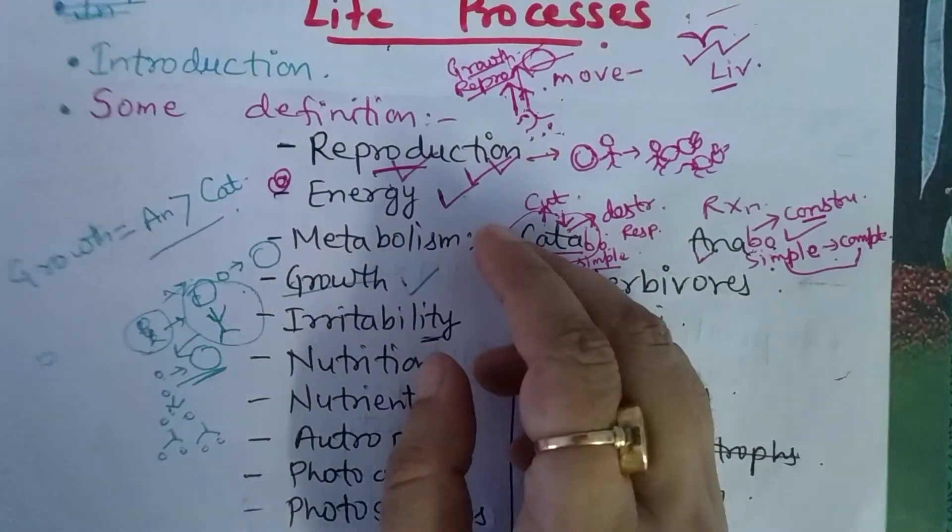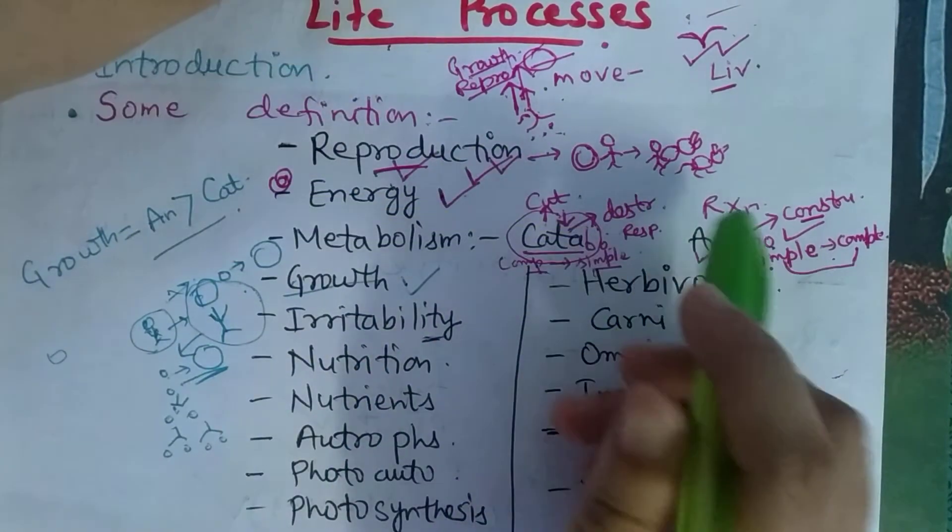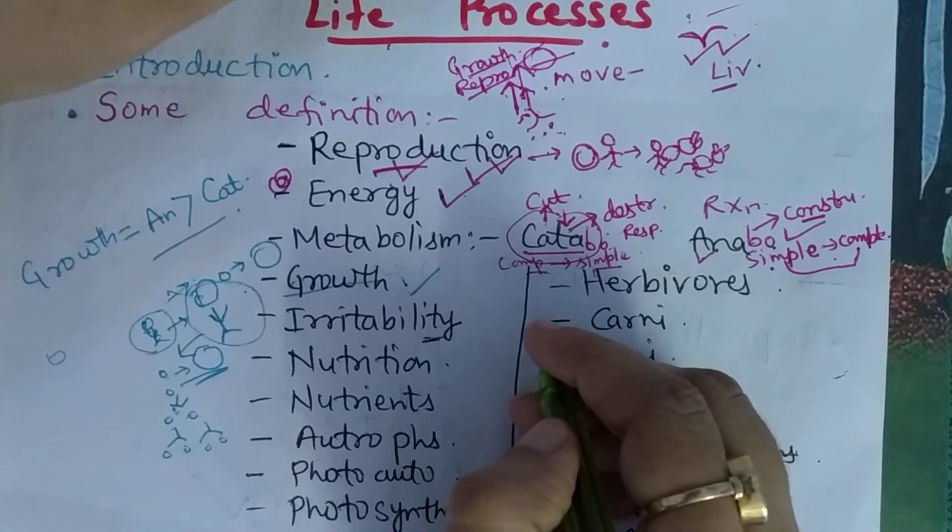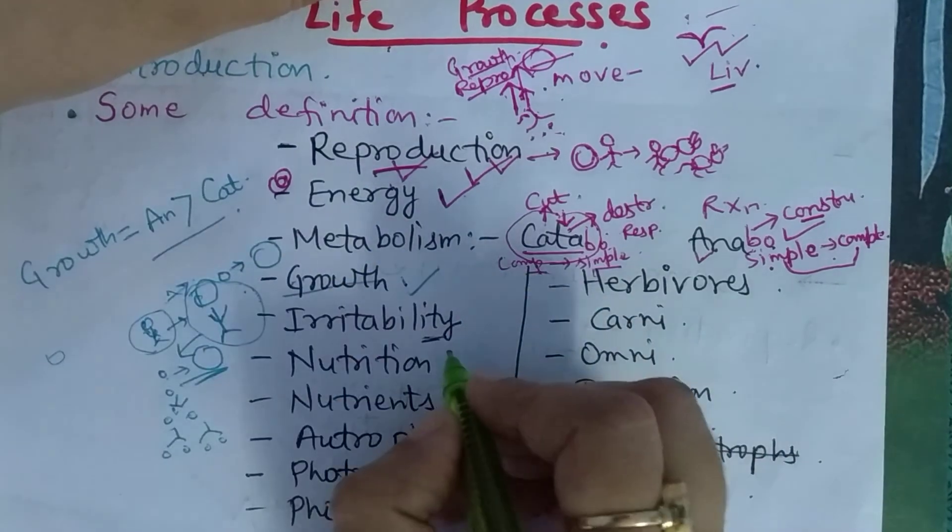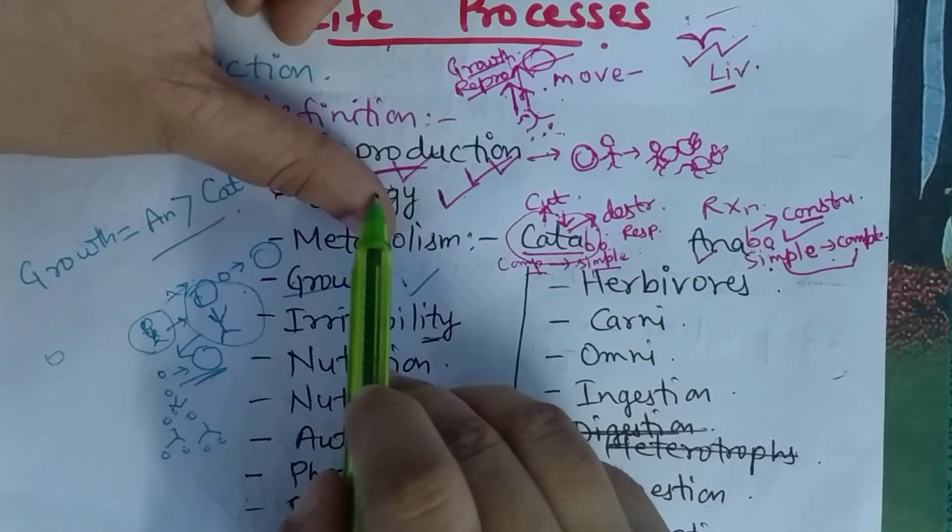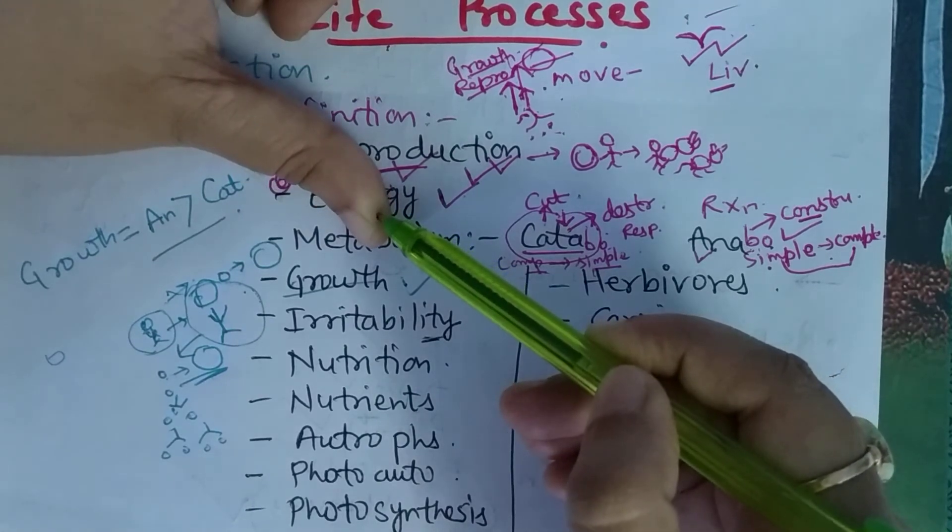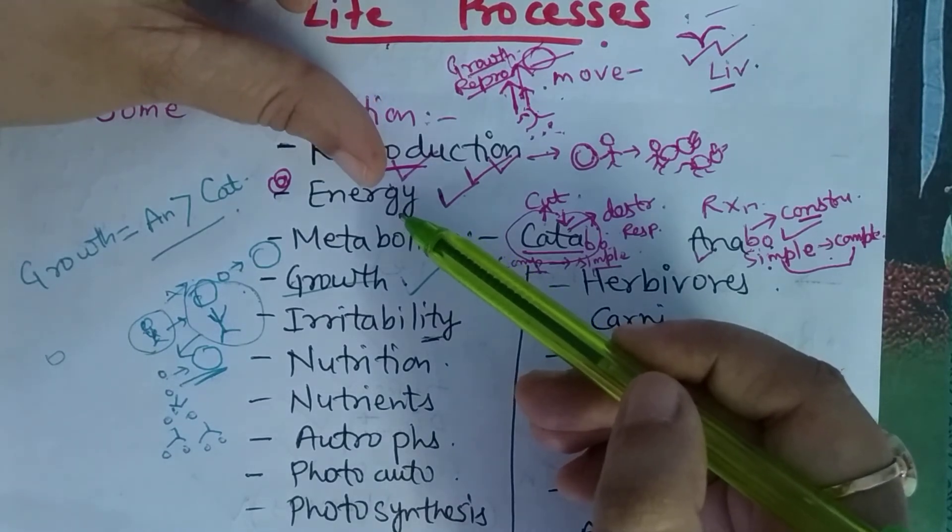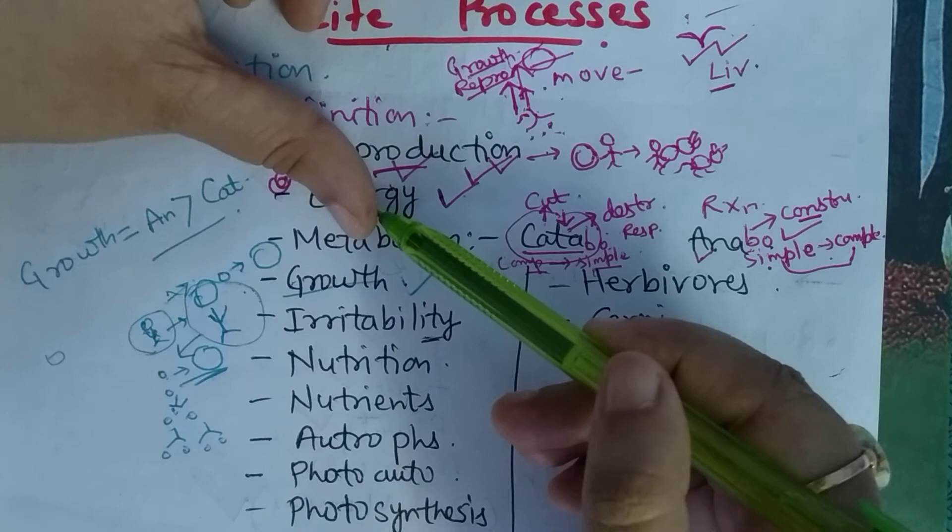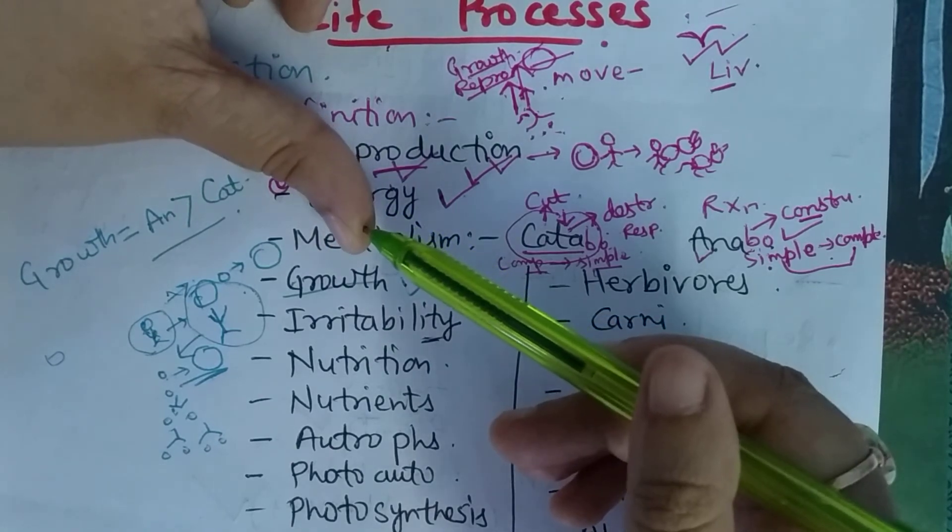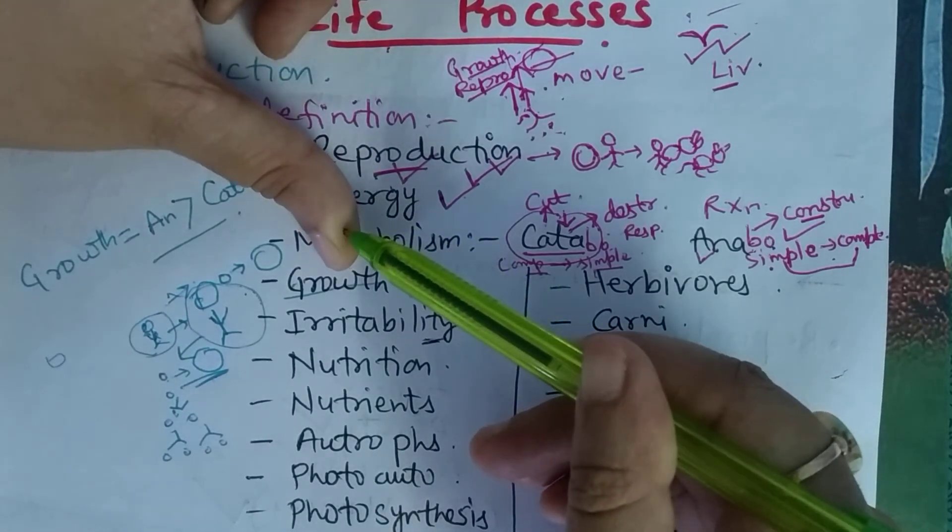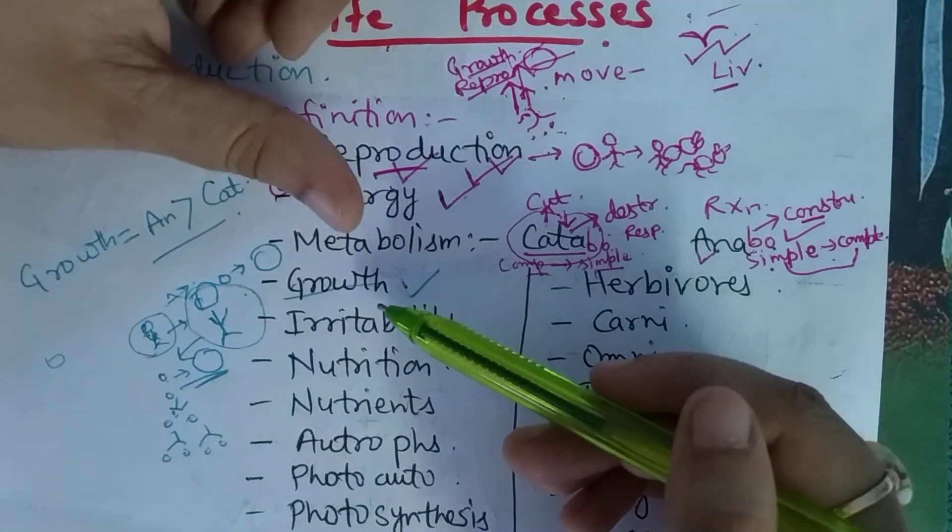Clear. Now come to the next point which is irritability. Understanding irritability is very important. It is also known as sensitivity. It is the process or ability to respond towards changes occurring in the environment. Any change that happens - suppose a needle pricks your thumb, what will you do? You'll quickly remove your hand. Wherever you get an injury or any sharp needle pricks you, you respond. So this is action and this is reaction.